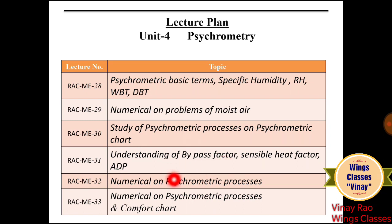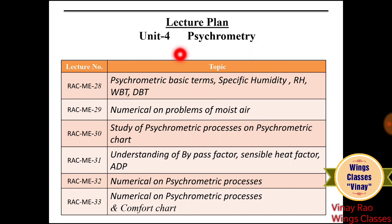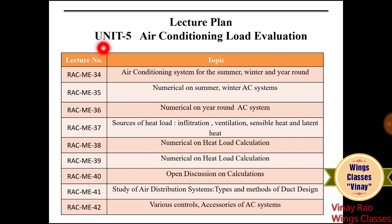Lecture 32 covers numerical problems on psychrometric processes. Lecture 33 covers problems and numericals on psychrometric processes and the comfort chart. This is the most important unit to understand because the concepts from Unit 4 will be directly used in Unit 5. Unit 5 is Air Conditioning Load Calculation.